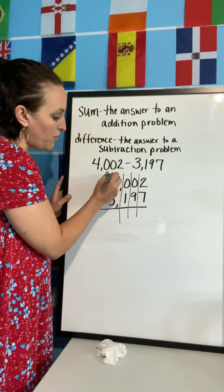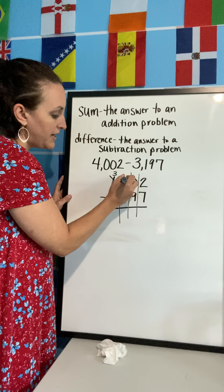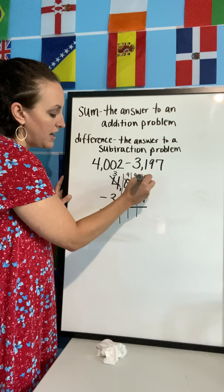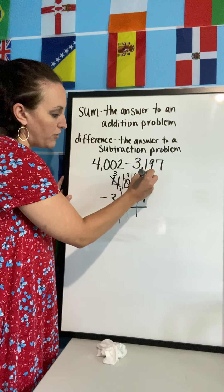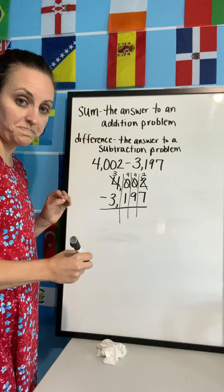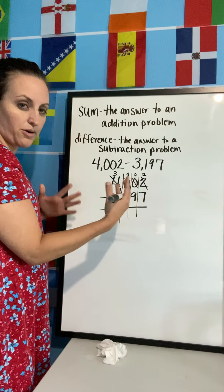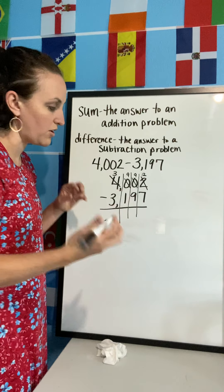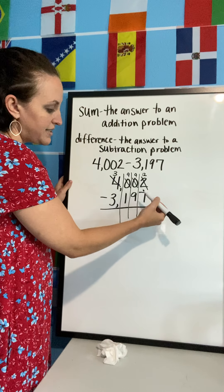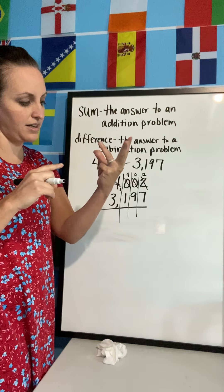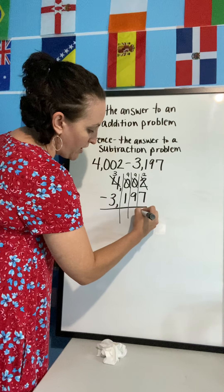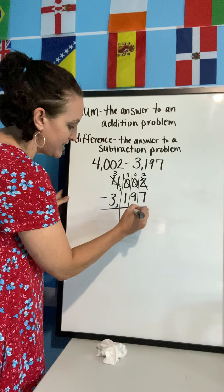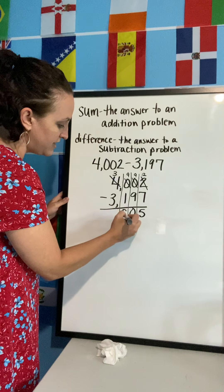Okay, I can borrow from this, so my four turns into a three, my zeros both turn into nines, and then the two turns into a twelve. So if it's not the zero you're borrowing from, it turns into a nine, and I'll show you another example with zeros just to kind of clarify that. Now I can subtract: 12 minus 7, well I want to think seven, eight, nine, ten, eleven, twelve. If I don't have my facts memorized, you do have fingers, they work. Nine minus nine is zero. Nine minus one is eight. Three minus three is nothing, so the answer is eight hundred five.